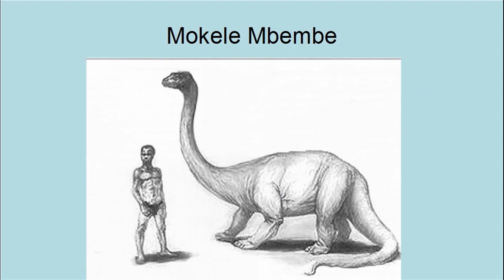Mokele-Mbembe lives in the Congo swamps — said to be the most miserable swamp in the world, right on the equator, 95 degrees and 95% humidity all the time with mosquitoes everywhere. The swamp was visited in 1980 by a team headed by Dr. Roy Mackal from the University of Chicago. They showed the natives pictures of a Diplodocus from a kid's coloring book and asked, 'Have you ever seen an animal that looked like this?' The natives said, 'Oh yeah, that's Mokele-Mbembe — he lives in the swamp.' Mokele-Mbembe are about 20 feet long, most of which are neck and tail. The body is about the size of a hippopotamus. It is claimed that the animals live in caves underwater, barely sticking their necks out to grab plants on the side of the river.